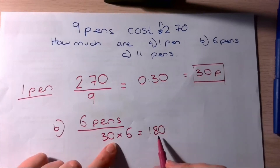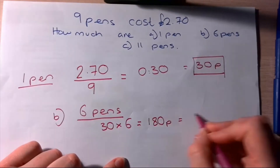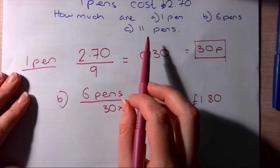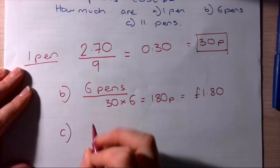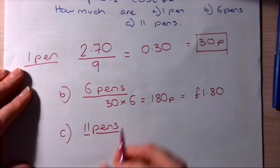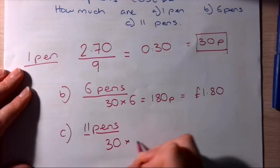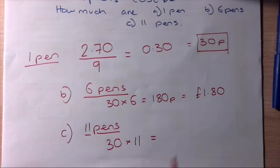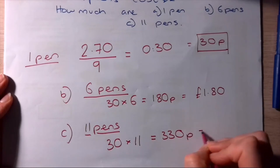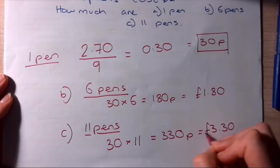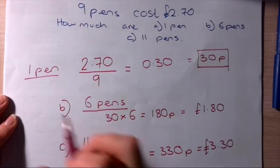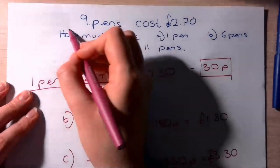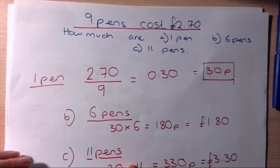For six pens, take the price of one pen — thirty pence — and multiply by six, which gives one hundred and eighty pence, or one pound eighty. For eleven pens, it's thirty pence times eleven. You can do thirty times ten — that's three hundred — then add one more thirty, giving three hundred and thirty pence, which equals three pounds thirty. We always find the price of one first by dividing the total cost by the quantity given.